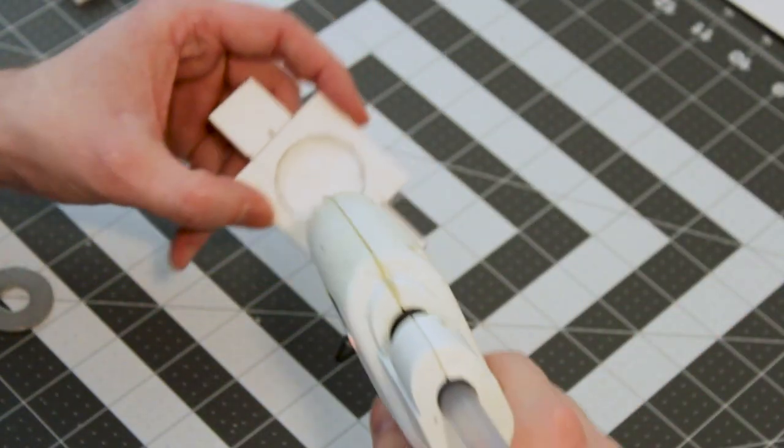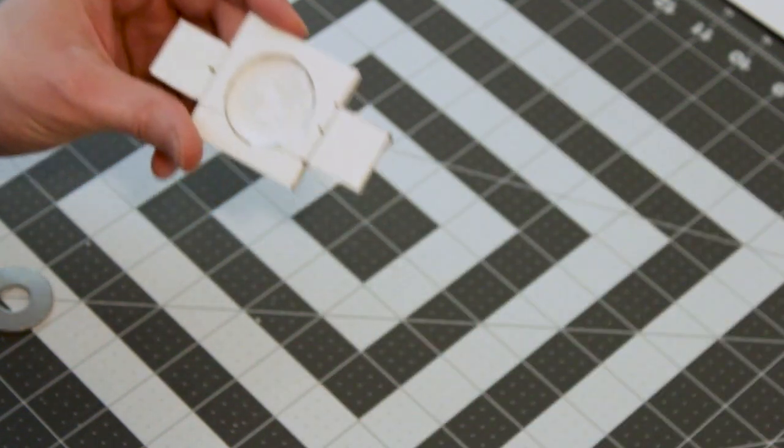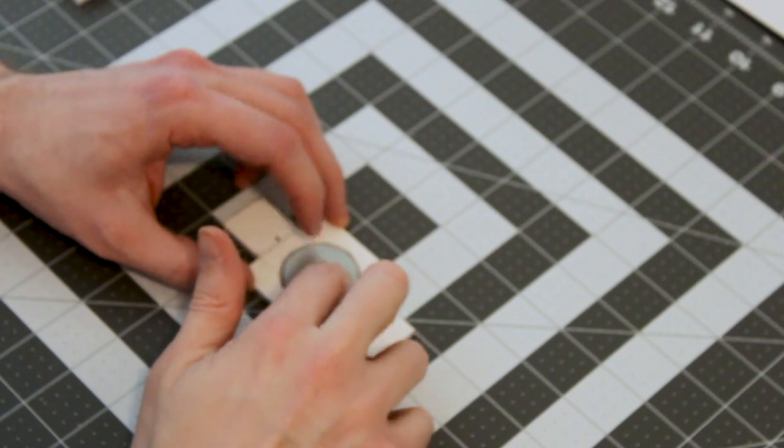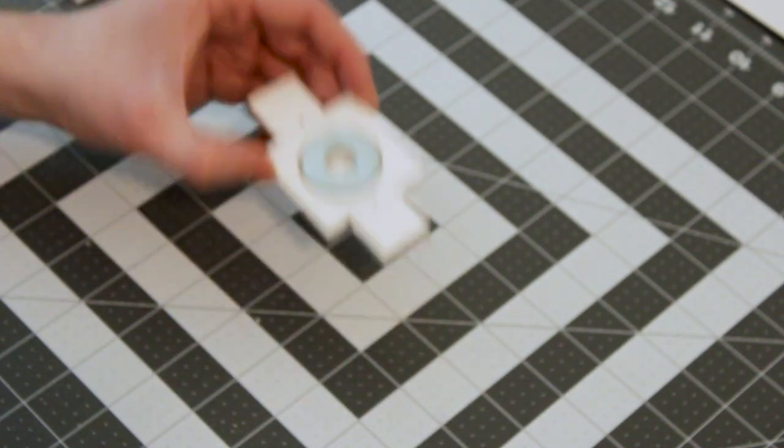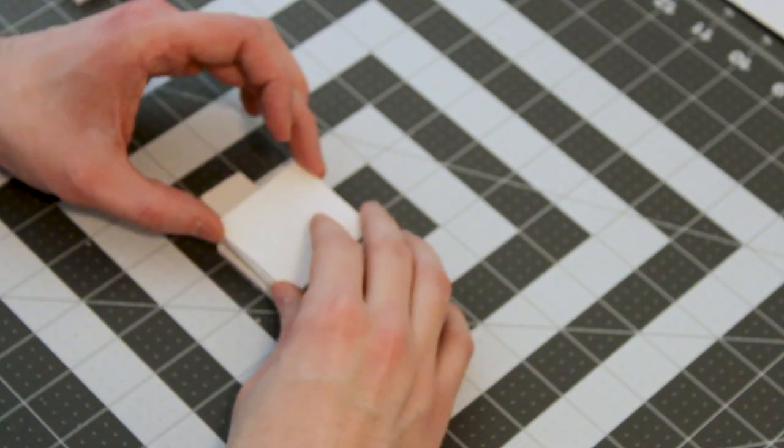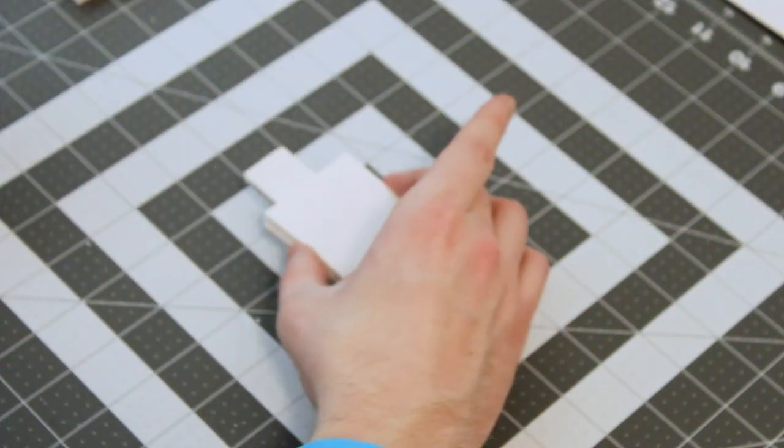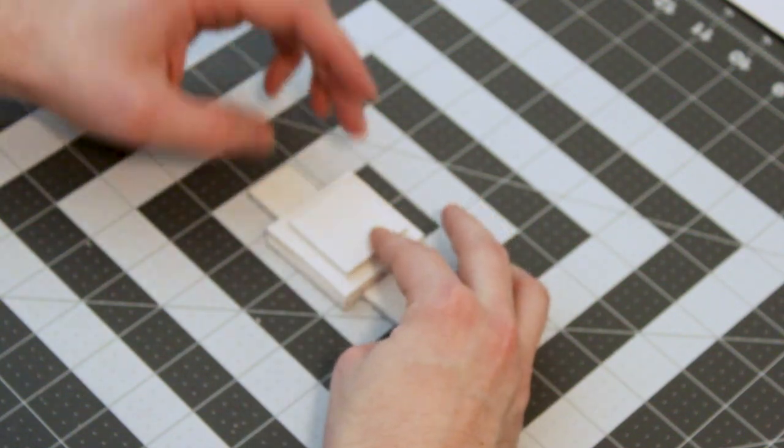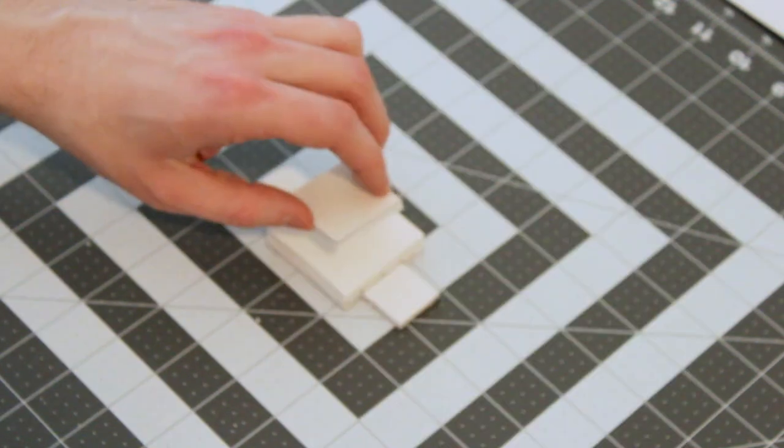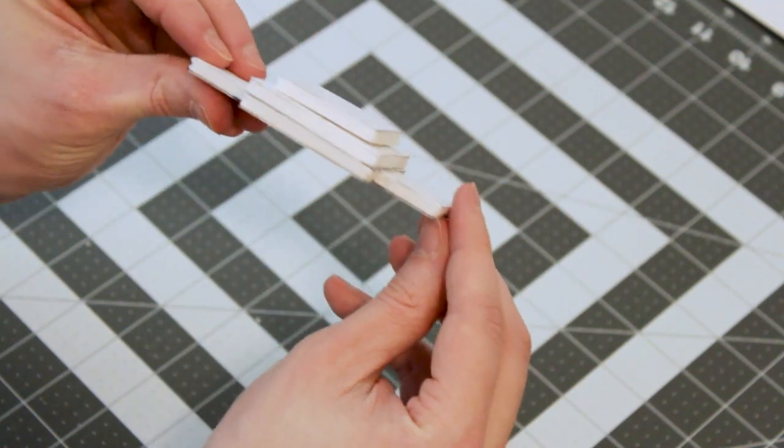So I'm just going to fill that crevice with hot glue and put the washer back in. Try not to burn yourself. I definitely burned myself. Then we're going to cover the top in hot glue and assemble the rest of the base. There we go.